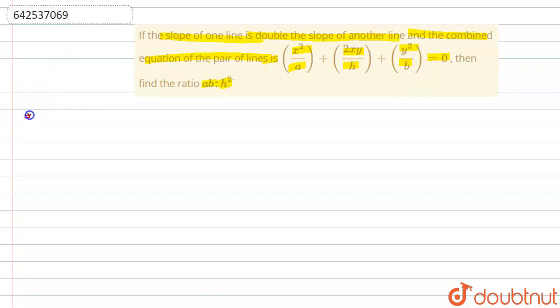So in this problem, we are given the combined equation of two lines: x²/a + 2xy/h + y²/b = 0.